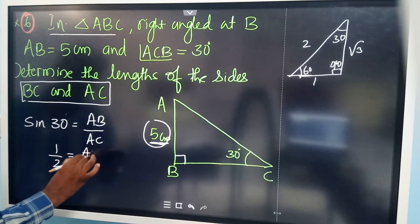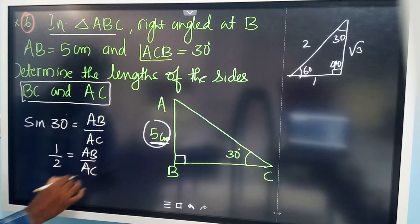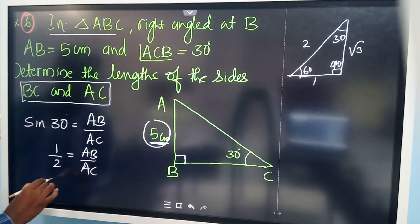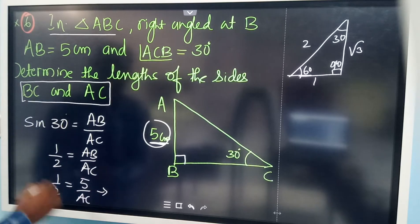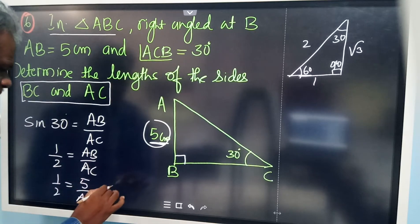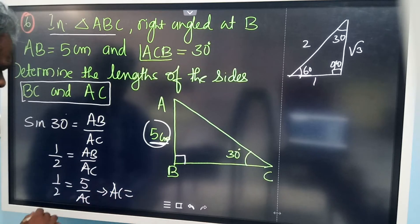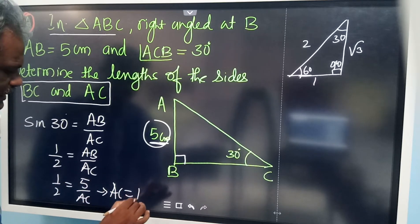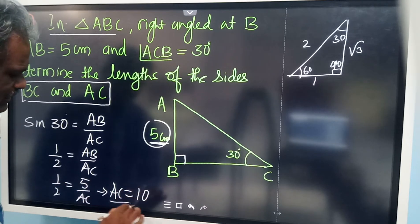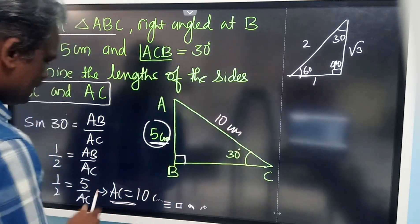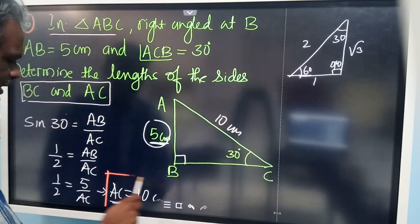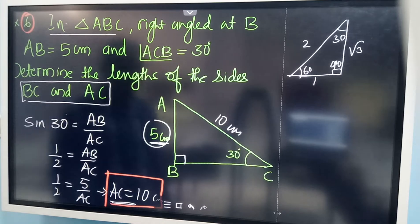So sine 30 = AB by AC. Substituting AB = 5: 1 by 2 equals 5 by AC. Solving, AC × 1 = 5 × 2 = 10. Therefore AC is equal to 10 centimeters.